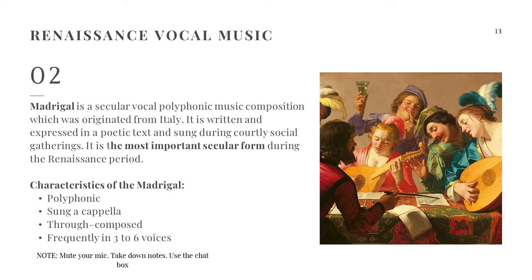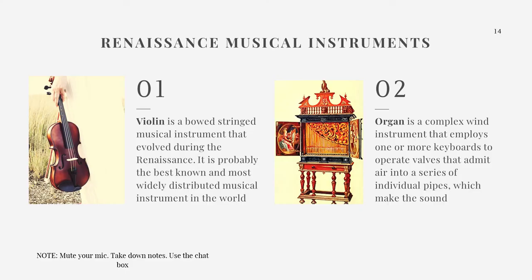Now let us talk about the renaissance musical instruments. First is the violin, which was invented during the renaissance period. It is a bowed instrument — meaning it uses a bow — and is composed of four strings. It is probably the best known and most widely distributed musical instrument in the world. Second is the organ, a complex wind instrument that employs one or more keyboards to operate valves that admit air into a series of individual pipes which produce sound.